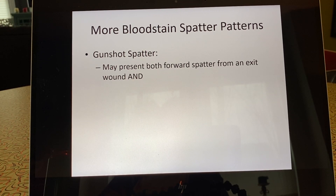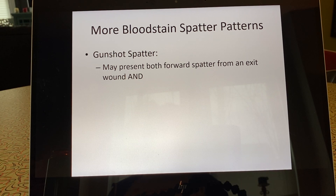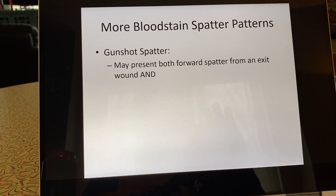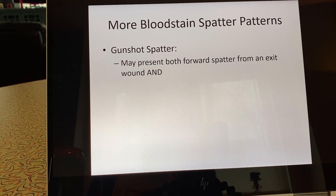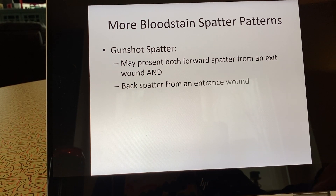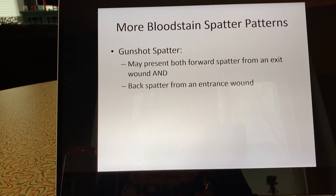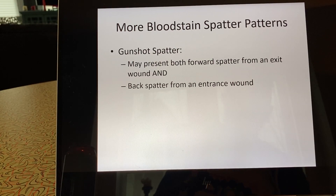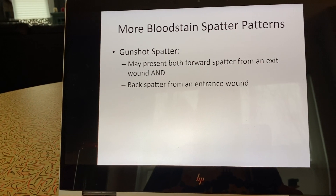One of the definitions I went through last time was forward and back spatter. We see that in gunshots especially when the person is somewhat up close. Keep in mind that blood cells are very small but they do have mass, and eventually gravity is going to bring them down. So if someone is a sniper 500 yards away, you're not going to see back spatter on them — gravity will bring that blood down before it travels that far. But if the shooter is up close, there's a really good chance you'll see back spatter on their clothing.